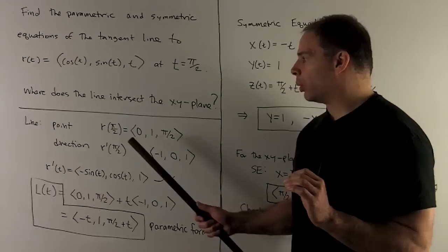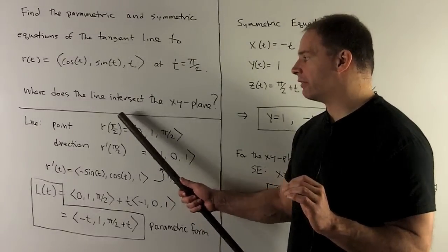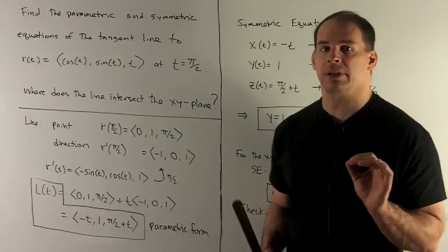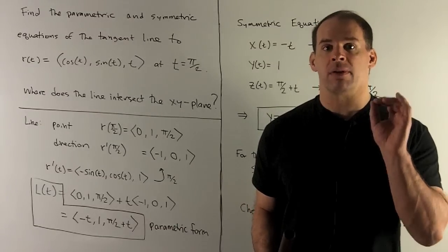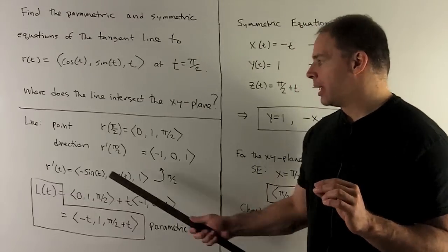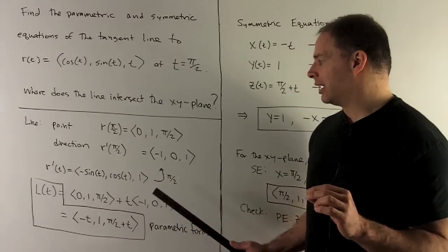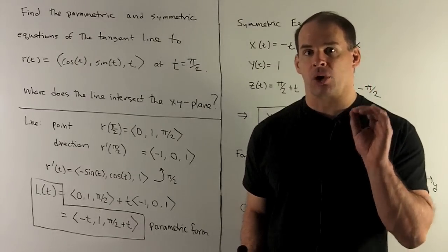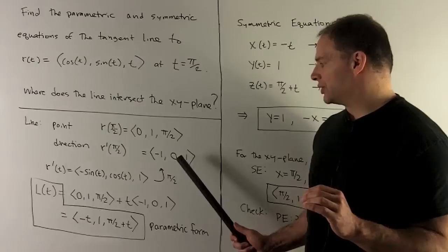So here, our point's going to be r(π/2), which is (0, 1, π/2). Then for our direction, we're going to take the derivative of r. That's going to give me (-sin(t), cos(t), 1). When I put in π/2, that gives me the direction (-1, 0, 1).